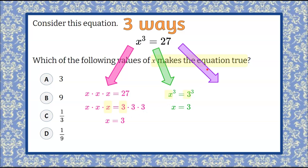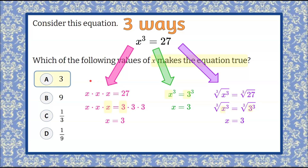The third way is to find the cube root, which is the inverse operation of cubing. If we find the cube root of each side: the cube root of x cubed equals the cube root of 3 cubed, since 27 is equivalent to 3 cubed. We want to find three of the same factors — the cube root of x cubed is x, and the cube root of 3 cubed is 3. So x equals 3, which is the only value that makes this equation true.